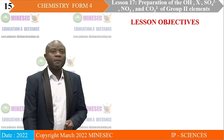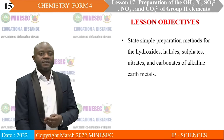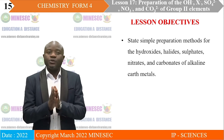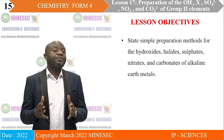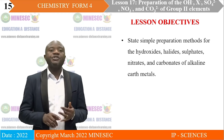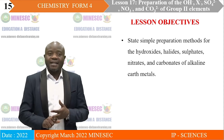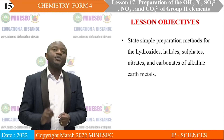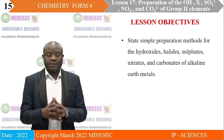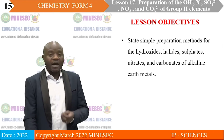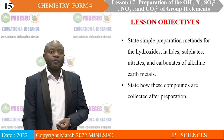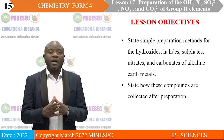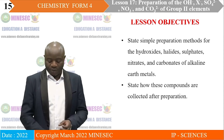Lesson objectives: By the end of this lesson, you should be able to state simple preparation methods by which the hydroxide, the halide, the sulfate, the nitrates, and carbonate of the Group 2 elements or alkaline earth metals are produced. You should also be able to state how these compounds are collected after preparation.